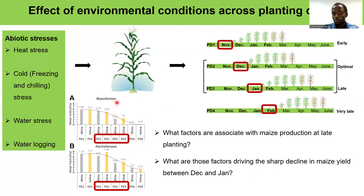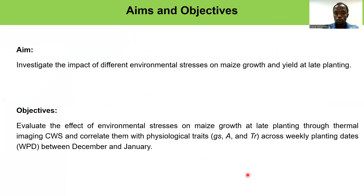Irrespective also of the cultivar. We then asked the question: what are the factors associated with maize production at late planting, and what are those factors driving the sharp decline observed between December and January? To answer those questions, we developed aims and objectives, one of which is to investigate the impact of different environmental stresses on maize growth and yield at late planting.